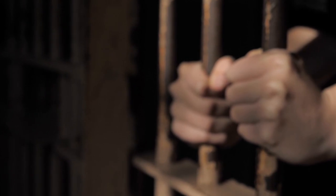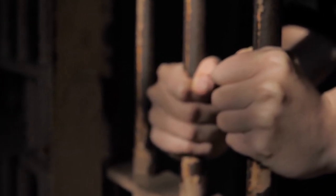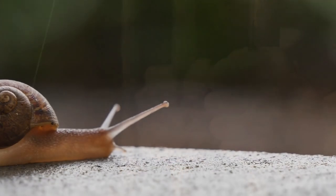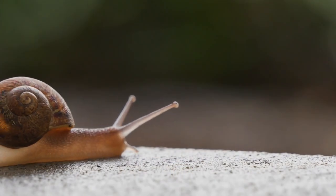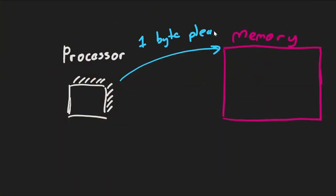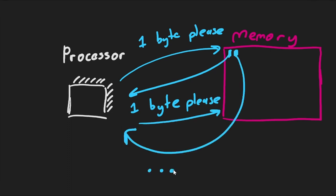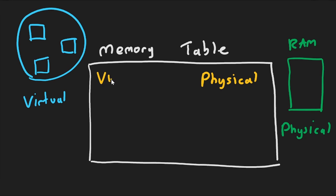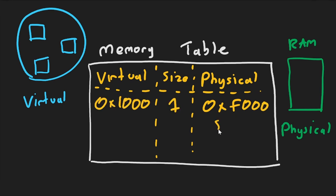Unfortunately, all good deeds do not go unpunished and virtual memory couldn't escape the wrath of a great idea. It turns out that requesting precise memory locations and memory blocks is unbelievably inefficient. Imagine if a processor only ever asks for one byte of memory at a time from the computing machine. The memory table would need three things at a minimum. The physical memory address, the mapped virtual address and the size requested.